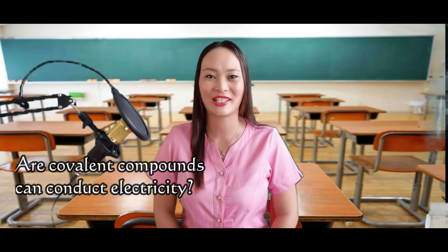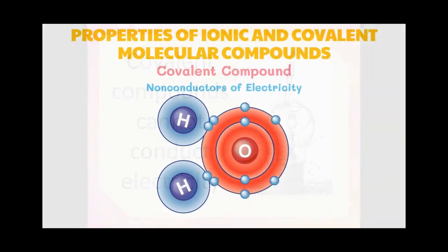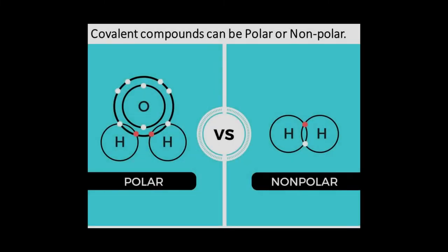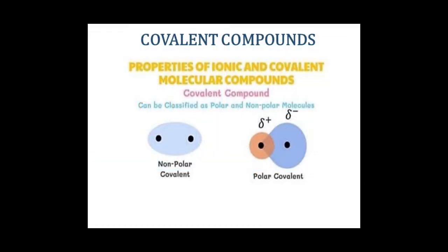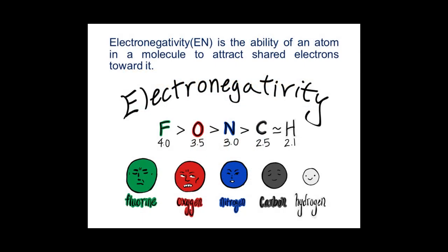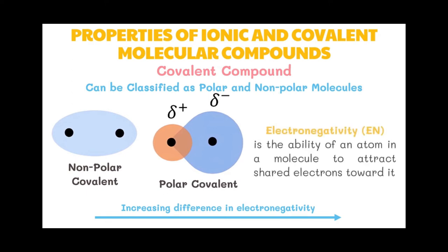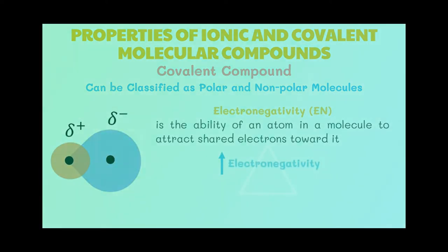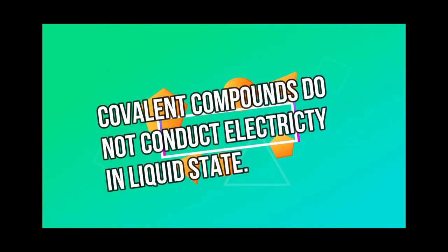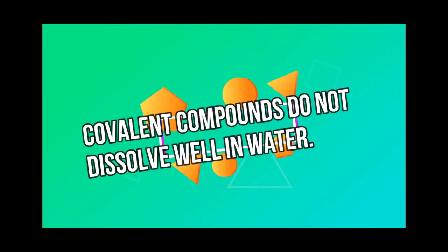Can covalent compounds conduct electricity? Covalent compounds cannot conduct electricity because the molecules of the compounds do not separate into ions. Thus, they cannot carry electricity in the solution. Covalent compounds can be polar or nonpolar. The polarity of the molecules results from the differences in the electronegativity of the bonded atoms. Electronegativity is the ability of an atom in a molecule to attract shared electrons toward it. The greater the electronegativity of an atom, the stronger is its ability to attract shared electrons toward itself and away from the less electronegative atom. Covalent compounds do not conduct electricity in liquid state and do not dissolve well in water.